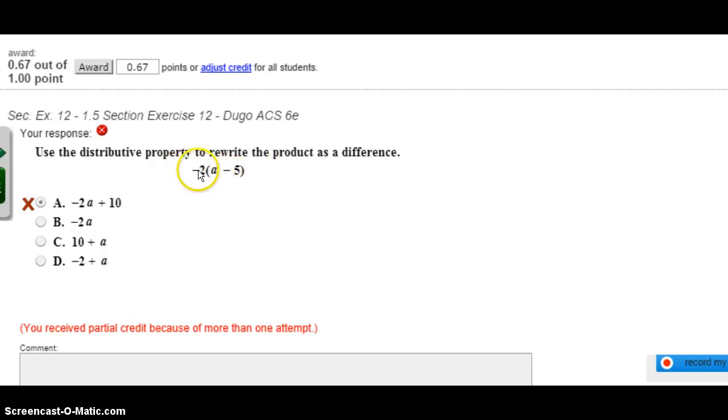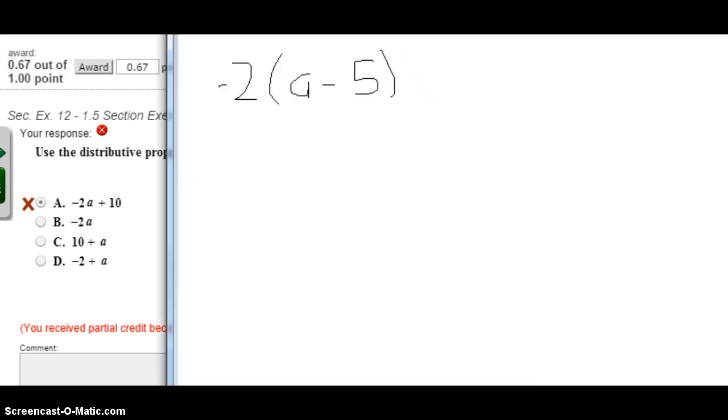When you are using the distributive property, you will take the number outside of the parentheses and multiply it by every single number inside. So you distribute it or pass it out to every single number that's inside. So in this one, we're going to take the 2 and multiply it by the a, which gives us negative 2a. And then you also have to multiply our negative 2 by the minus 5. So the 2 minuses will end up giving you a positive 10.